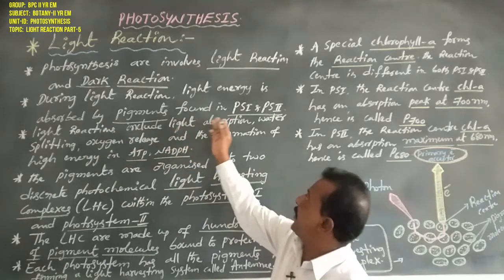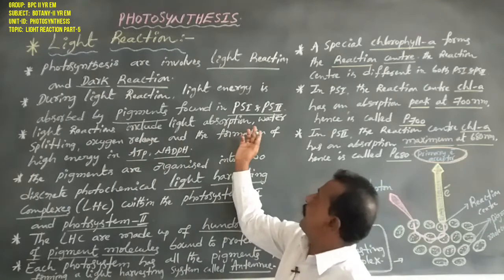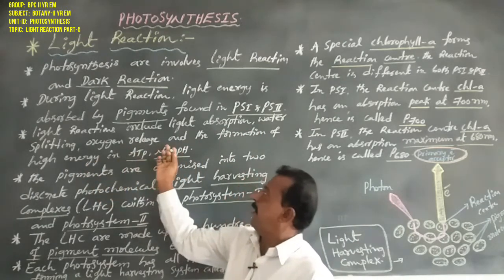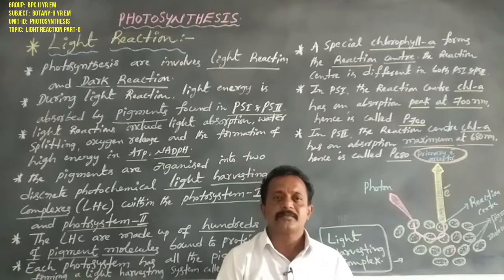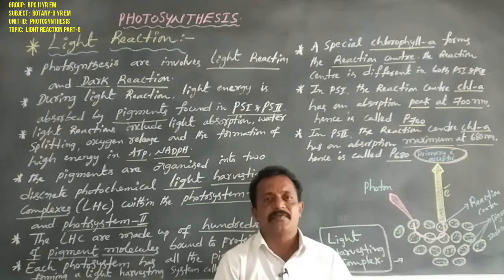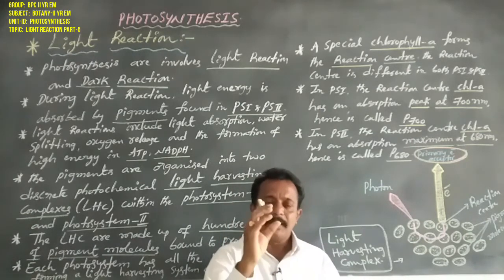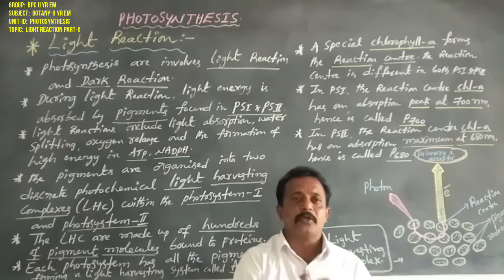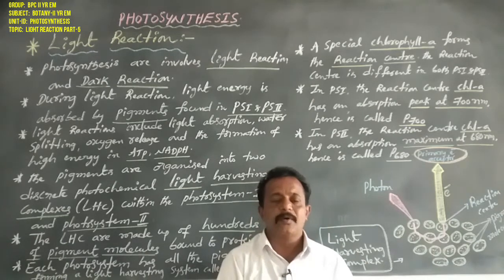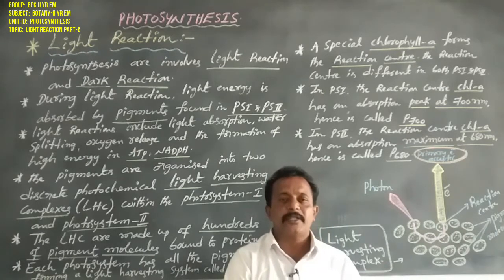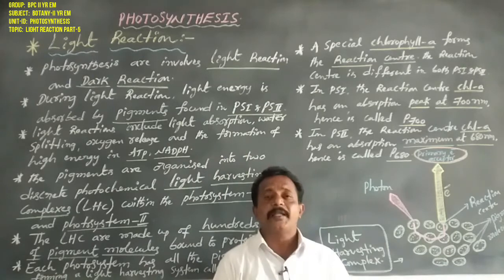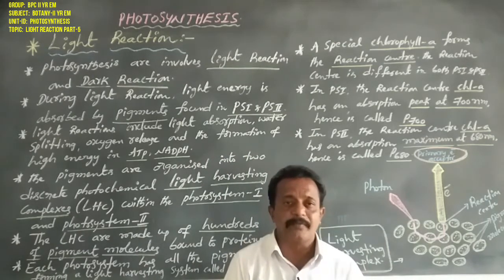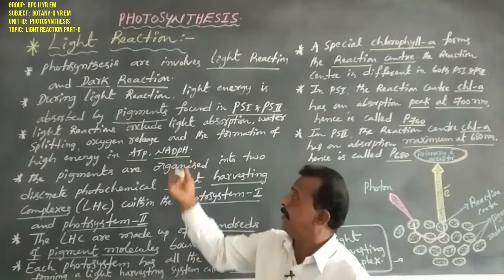Light reactions include light absorption, water splitting, oxygen release, and the formation of high-energy molecules ATP and NADPH. Water molecules are split in the light, releasing hydrogen, oxygen, and electrons. The oxygen is released, and chemical oxidation products NADPH and ATP are formed.